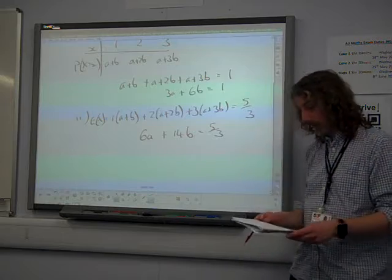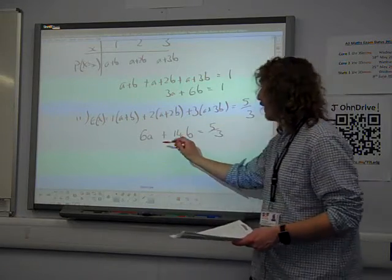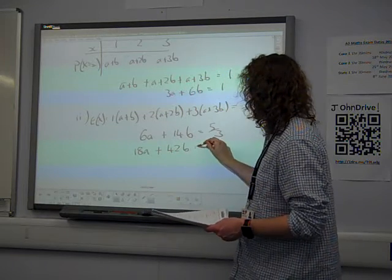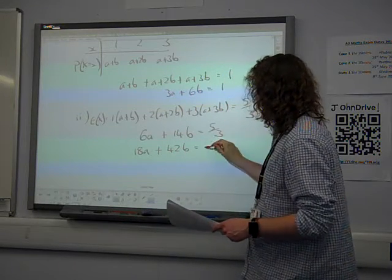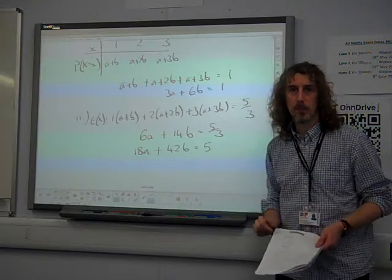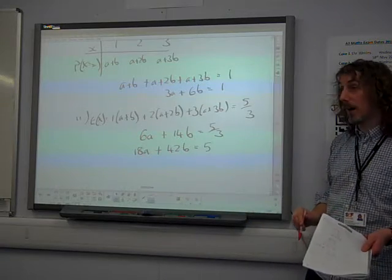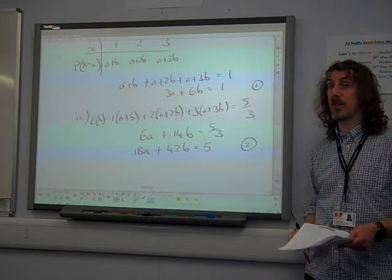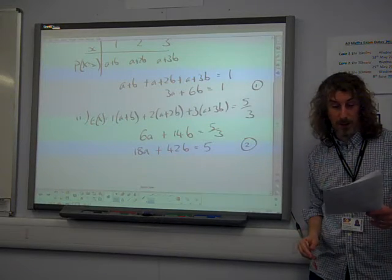I actually felt that I wanted to see that all on one line. So, I wrote that being 18a plus 42b is equal to 5. Look! There they are. There are my two simultaneous equations. How lovely.